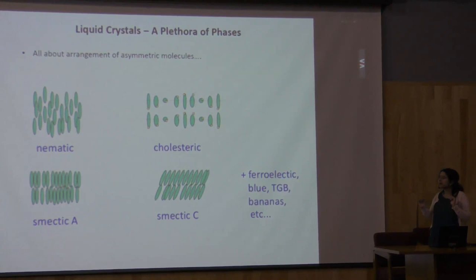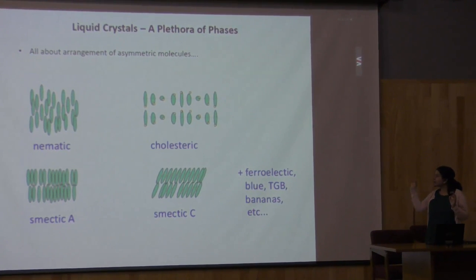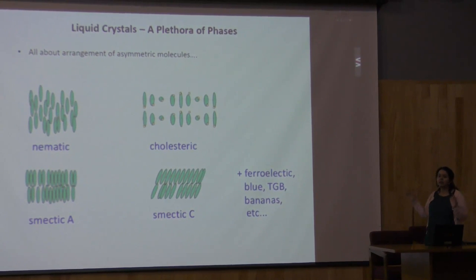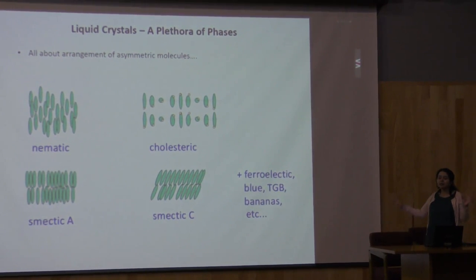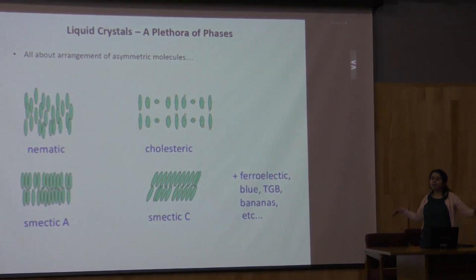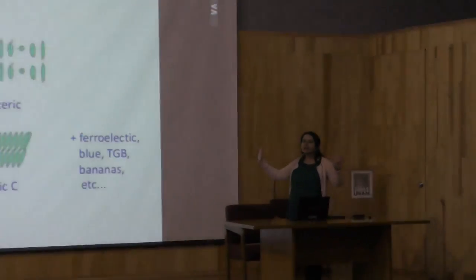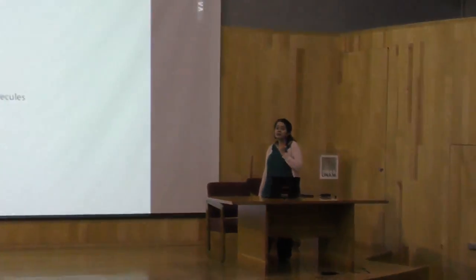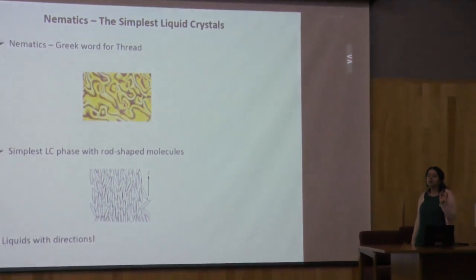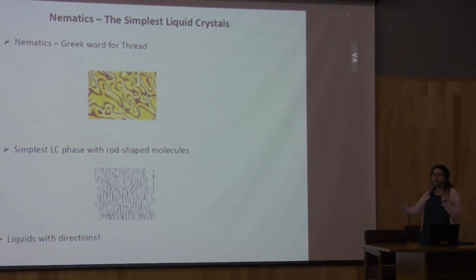There is a hierarchy of liquid crystalline phases. The three commonly studied ones are nematics, smectics, and cholesterics. Nematics are usually the least ordered, cholesterics are somewhere in between, and smectics are the most ordered. Think of this phase diagram: liquids, nematics, cholesterics, smectics, then full solids. For the rest of this talk you only need to remember what a nematic liquid crystal is — you don't need to worry about smectics or cholesterics.